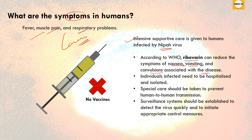Individuals infected need to be hospitalized and isolated, and special care should be taken to prevent human-to-human transmission. Also, a surveillance system should be established to detect the virus quickly and to initiate appropriate control measures. These are points you can write in your mains answer.